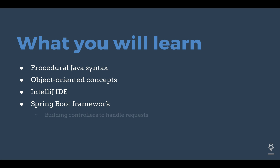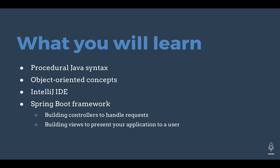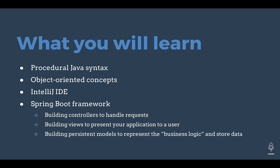In particular, we're going to look at building controllers to handle requests, views to present your application to a user, and persistent models to represent the business logic of your application and to store data in a database. In this sense, the concept of MVC is no different from what it was in Unit 2 when you were building Python web applications. The emphasis is going to be the same — organizing your code into models, views, and controllers — but we're going to be doing it specifically within Spring Boot and specifically within Java.